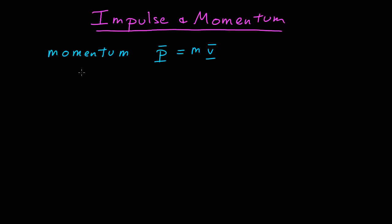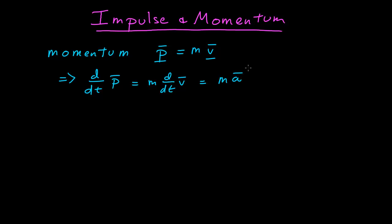To connect this to what we've been doing before with forces, it's useful to differentiate both sides. If we take the derivative of the momentum, then the derivative of the velocity — the mass is just a constant — we see that that's the mass times the acceleration, which is the net force on the object. So we can rewrite Newton's second law. In fact, this is how Newton originally stated it: the net force was the time derivative of the momentum. That's just a restatement of Newton's second law.